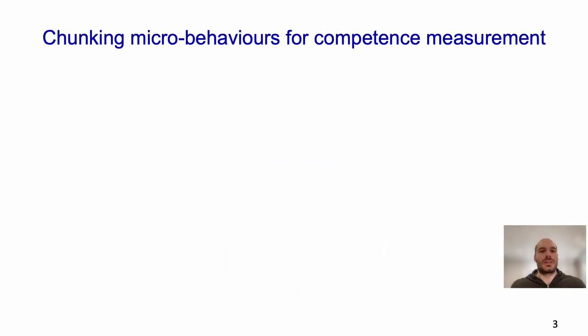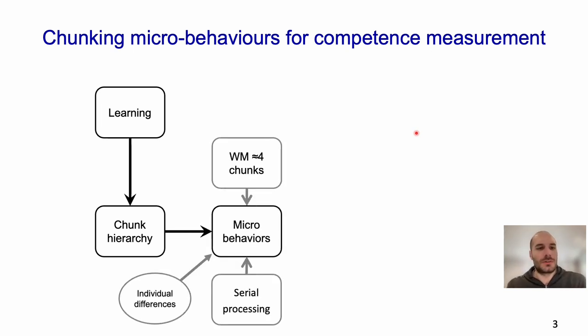Before moving next, let me give you some brief ideas about how we designed TIPS. If you are learning something, you are basically building a chunk hierarchy. If you are doing a task, such as copying a data visualization, you are getting micro-behaviors associated with processes of the chunk hierarchy. Micro-behaviors have two main constraints: the working memory capacity, which is about four chunks, and serial processing, because we can only copy one element at a time.